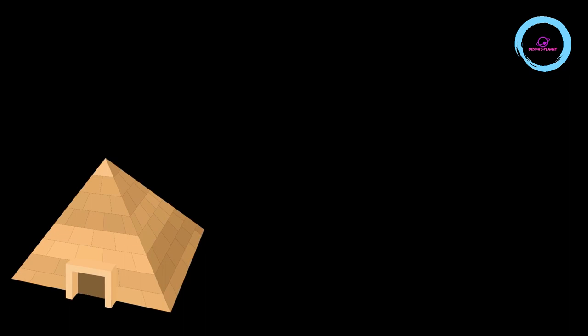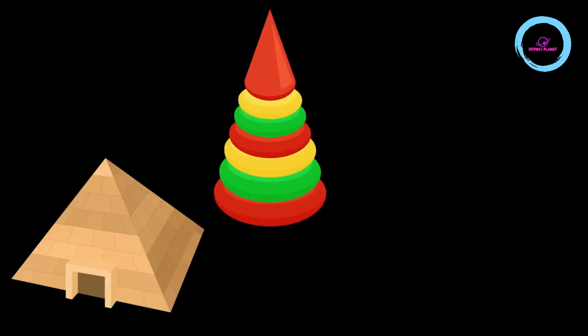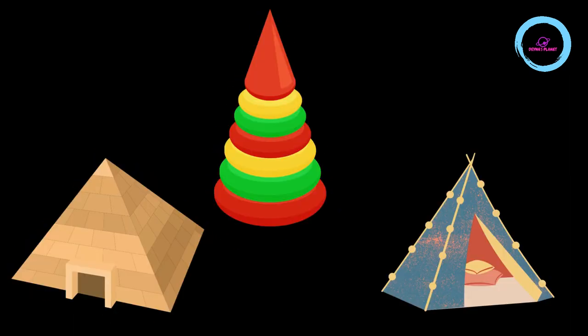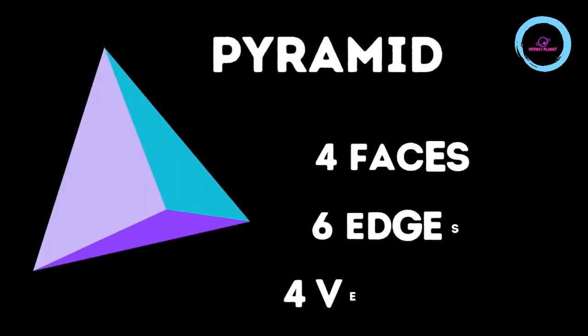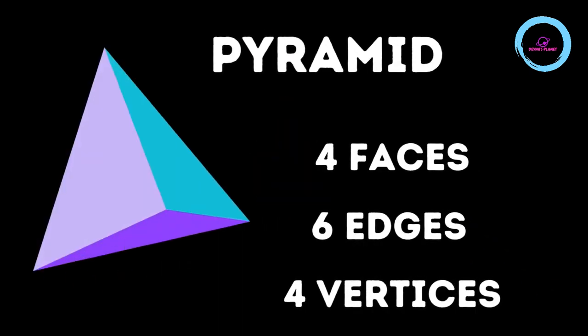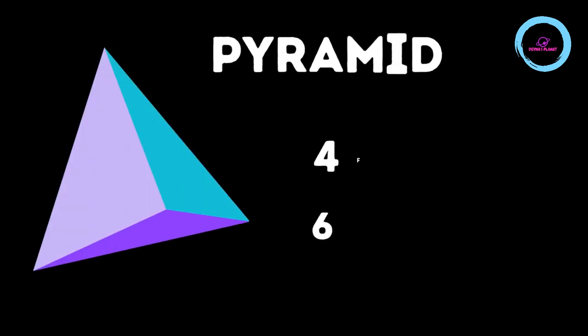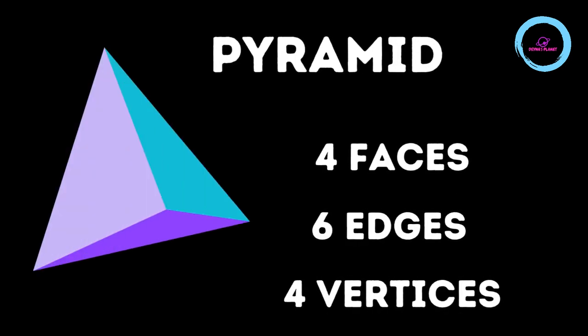This is a pyramid. This is a ring toy. This is a tent. So let's guess what these things have in common. Yes, they are all pyramids. A pyramid has four faces, six edges and four vortices.